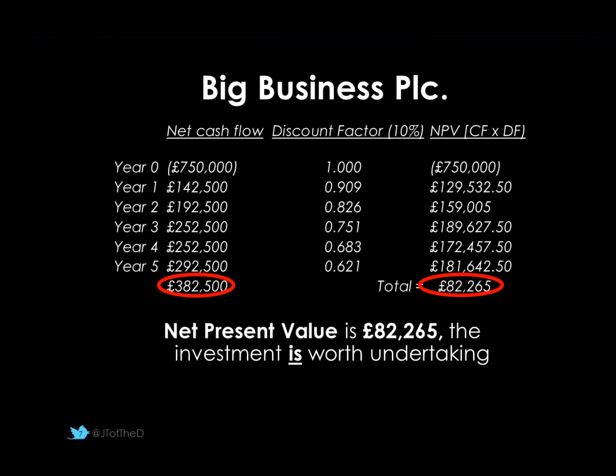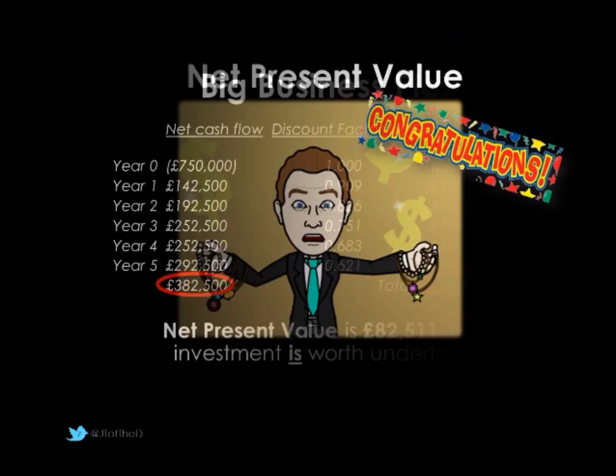It's always good at the bottom of the page to make a little statement to explain this — certainly put lots of numbers on your page. Our net present value is £82,265. In this case, as it is above zero, our investment is worth taking.